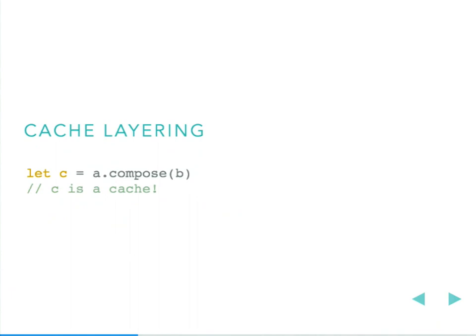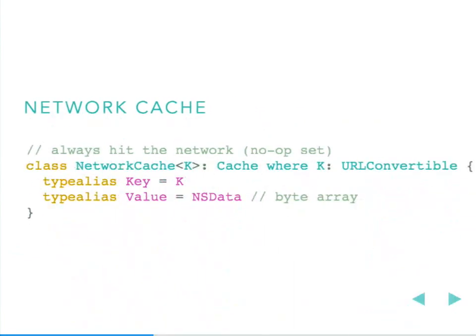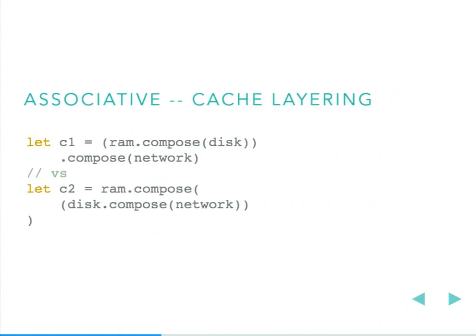We can make a cache made up of two caches, and we can even add a third. For our third cache we can model the network as a cache: URLs are keys, bytes are values, get makes a network request, and set does nothing. We then have a decision about how to compose these three things — RAM and disk first, then network; or disk and network first, then RAM in front. These are the same — the proof is left as an exercise — which means this compose operation is associative.